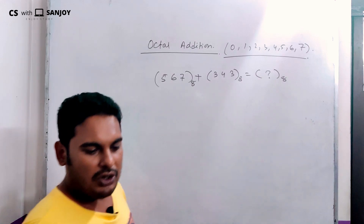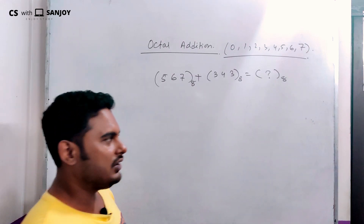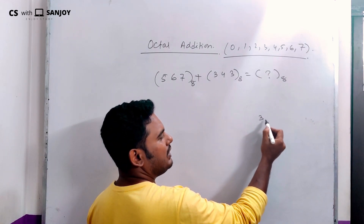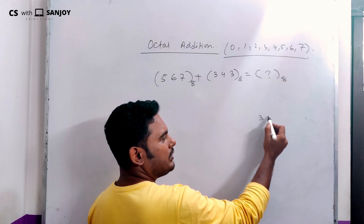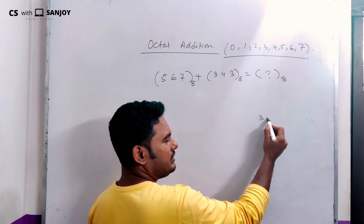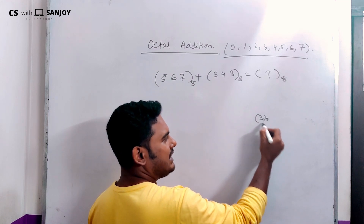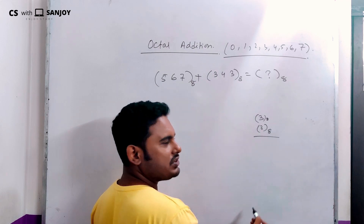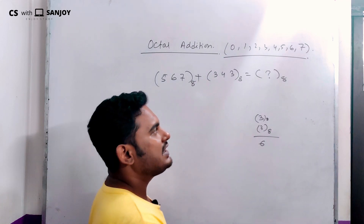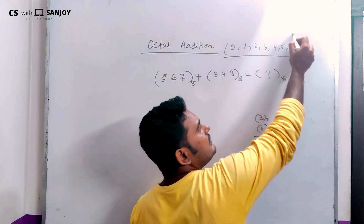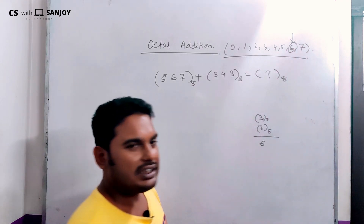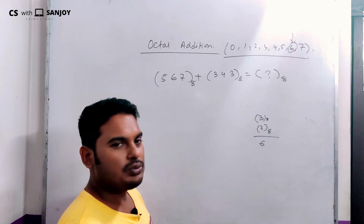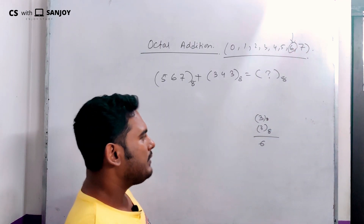Similarly, when we add octal numbers, we work in base 8. For example, 3 base 8 plus 3 base 8 equals 6. And 6 is well within the octal number range, so there is no carry.